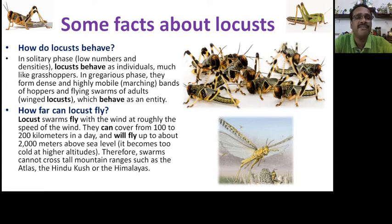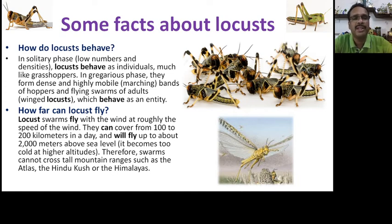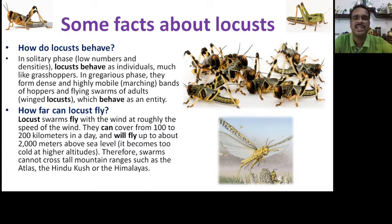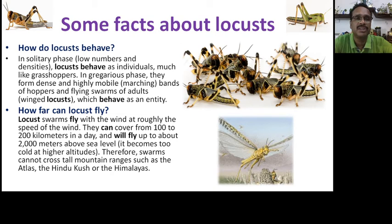How do locusts behave in their solitary phase? At low numbers and densities, locusts behave as individuals — they don't bother about neighbors, much like grasshoppers, and eat and live happily on their own. In the gregarious phase, however, they form dense, highly mobile marching bands of hoppers and flying swarms of adult winged locusts, behaving as a single entity and aggressively feeding on large agricultural fields.